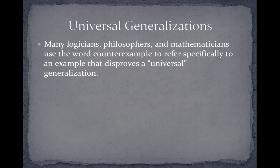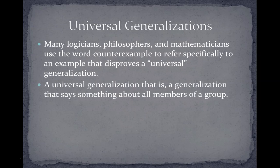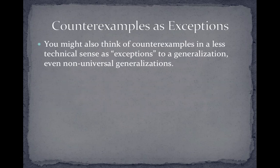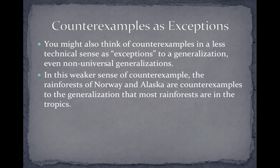Many logicians, philosophers, and mathematicians use the word counter-example to refer specifically to an example that disproves a universal generalization. A universal generalization is a generalization that says something about all members of a group — for example, all birds can fly. You might also think of counter-examples in a less technical sense as exceptions to generalizations, or even non-universal generalizations. In this weaker sense of counter-example, the rainforests of Norway and Alaska are counter-examples to the generalization that most rainforests are in the tropics.